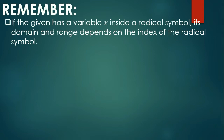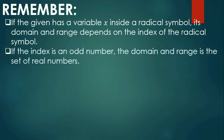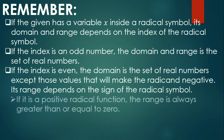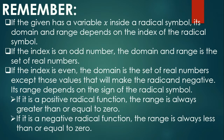If the given has a variable x inside the radical symbol, its domain and range depends on the index of the radical symbol — the number on the upper left side of the radical symbol. If the index is an odd number, the domain and range is the set of real numbers, like cube root, fifth root, or seventh root. If the index is even, like square root, fourth root, or sixth root, the domain is the set of real numbers except those values that will make the radical negative. Its range depends on the sign of the radical symbol: if positive, the range is always greater than or equal to 0; if negative, the range is always less than or equal to 0.